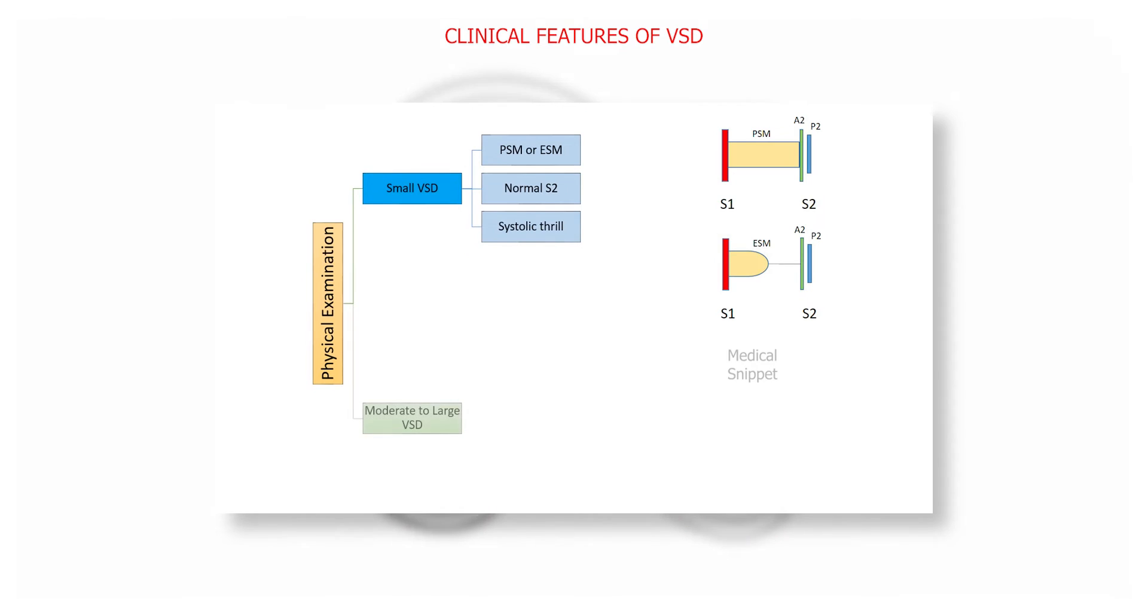Large VSD has the classical pansystolic murmur at the lower left sternal border. There is also a mid-diastolic murmur at the apical region due to increased flow across mitral valve, thus producing relative mitral stenosis. Second heart sound is narrow split and P2 is loud.